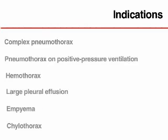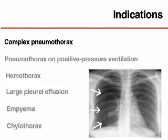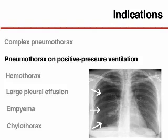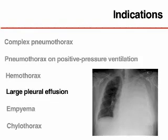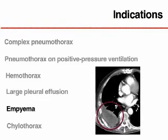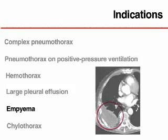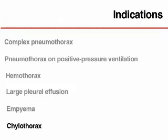The most common indications for chest tube drainage are pneumothorax that is recurrent, persistent, under tension, or bilateral; any pneumothorax in a patient on positive pressure ventilation; hemothorax; recurrent or symptomatic large pleural effusion; empyema; and chylothorax.